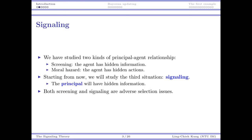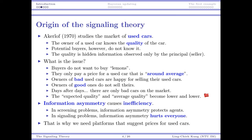Altogether, screening and signaling are both called adverse selection problems. So in the future when someone talks to you about adverse selection, don't forget to first make sure whether it is the principal or the agent that has private information. Let's talk about the origin of signaling.